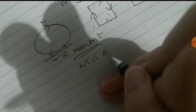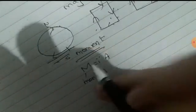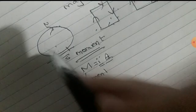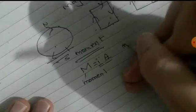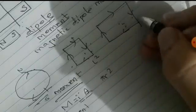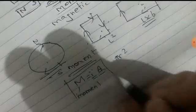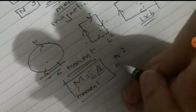M equals IA. M means moment, I means current in a closed loop, and A means area. For a circular loop, area is πR². For a squared loop, area is L². For a rectangular loop, area is L into B. So this formula gives the magnetic moment.